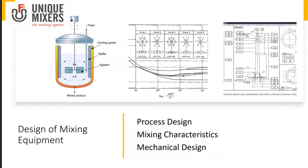Finally, the mechanical design includes calculations such as the shaft diameter. If we are processing under vacuum, we also need to calculate the thickness of the vessel in which the mixing element will be placed. The design of mixing equipment has several aspects and all of these need to be considered, as each one is critical for successful mixer production.